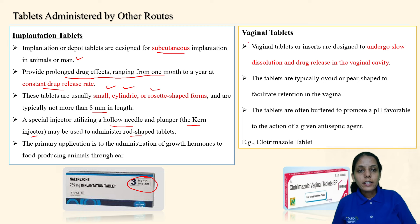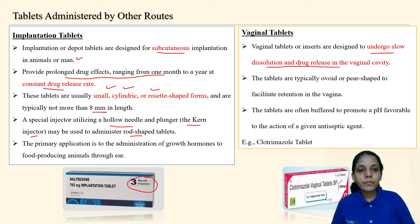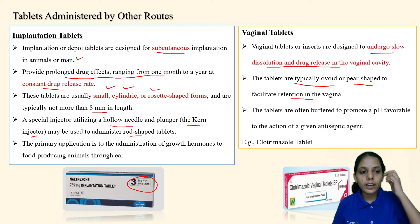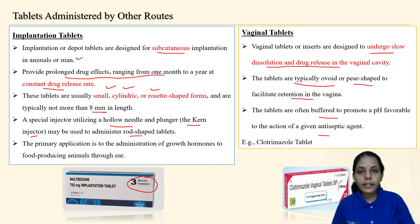Vaginal tablets or inserts are designed to undergo slow dissolution and drug release in the vaginal cavity. The tablets are typically ovoid or pear-shaped to facilitate retention in the vagina. They are often buffered to promote a pH favorable to the action of a given antiseptic agent. An example is the clotrimazole vaginal tablet.